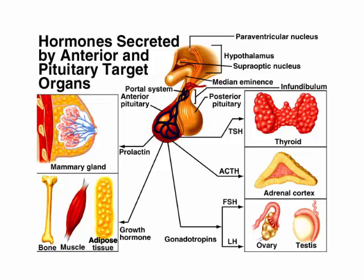Next is adrenocorticotropic hormone, ACTH. Released from the anterior pituitary, it goes to the adrenal cortex — the outside layer, as opposed to the medulla inside. Then TSH, thyroid stimulating hormone, which you may know from the PhysioEx rat lab — it stimulates the thyroid.